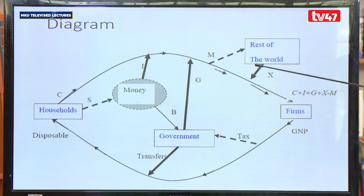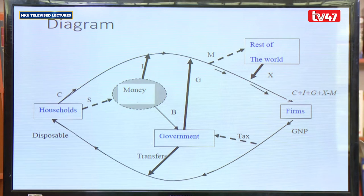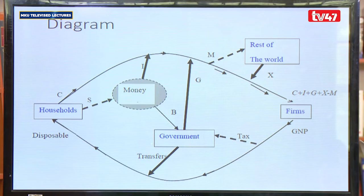From the introductory part to macroeconomics, we have different sectors: a two-sector model, a three-sector model, and a four-sector model. In this case, we have a four-sector model, whereby we have the household, the firms, the government, and the rest of the world. In macroeconomics, resources flow in the form of a circle — what comes into the household is the same which goes out of the household.